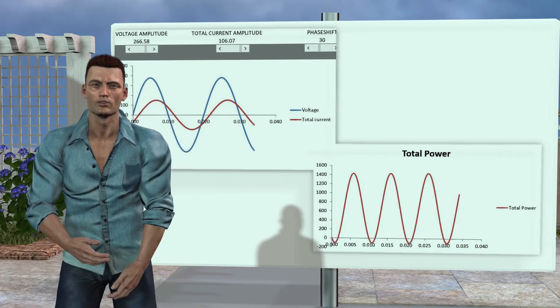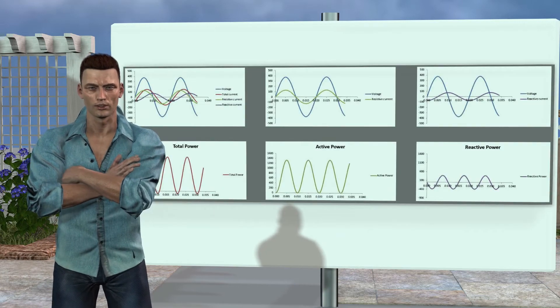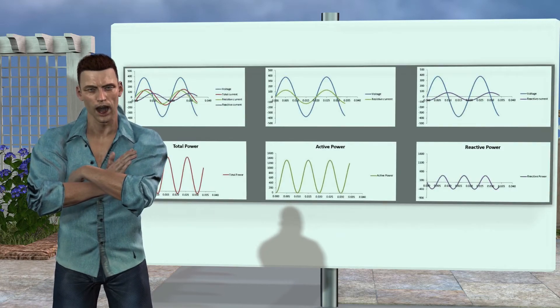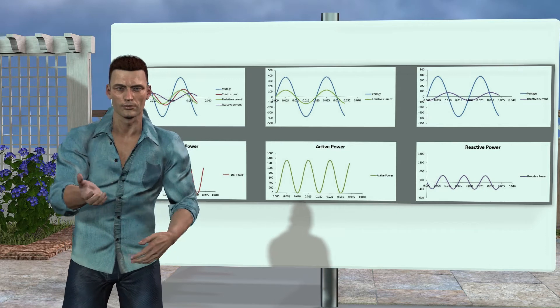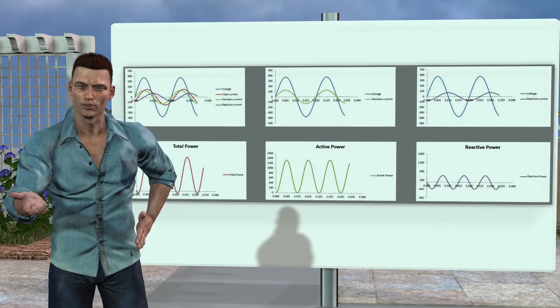Now, we can use the trick of decomposing the real current into active and reactive currents, and we can multiply these currents by the voltage, to obtain the lower center and right images.